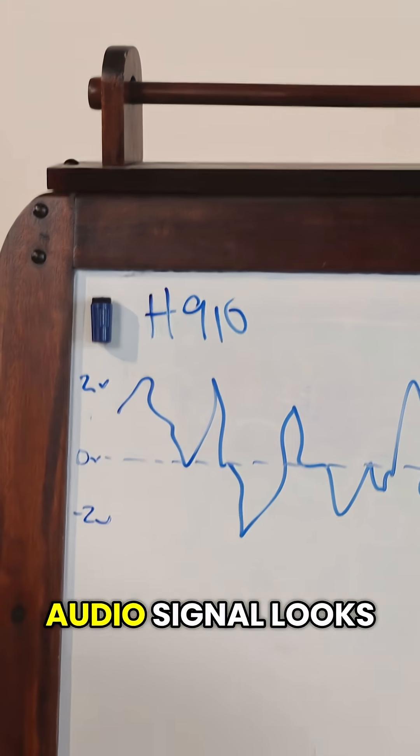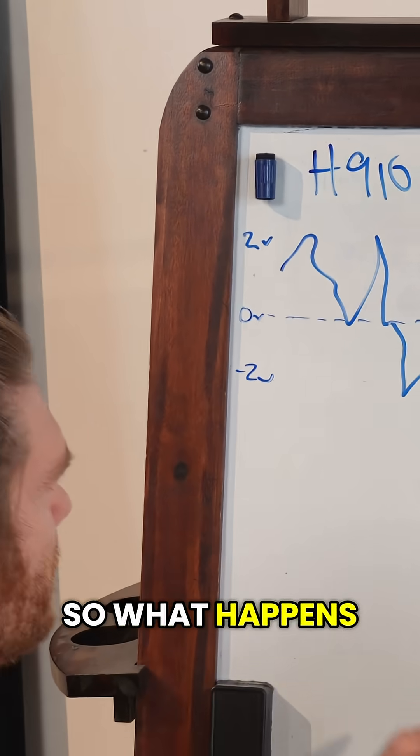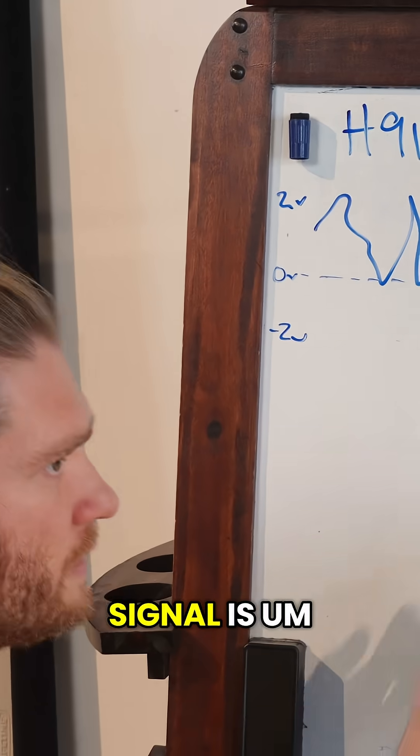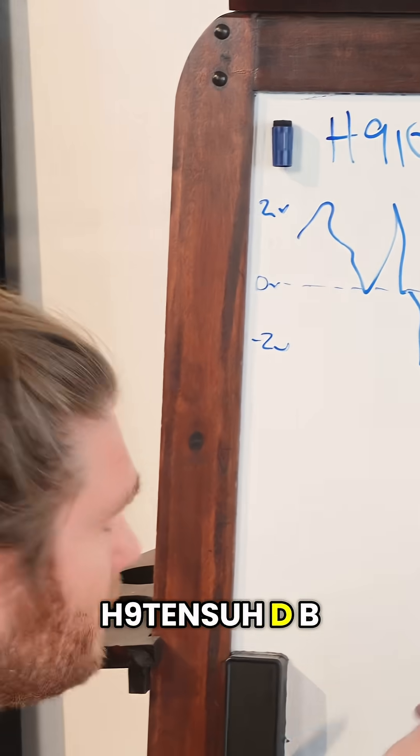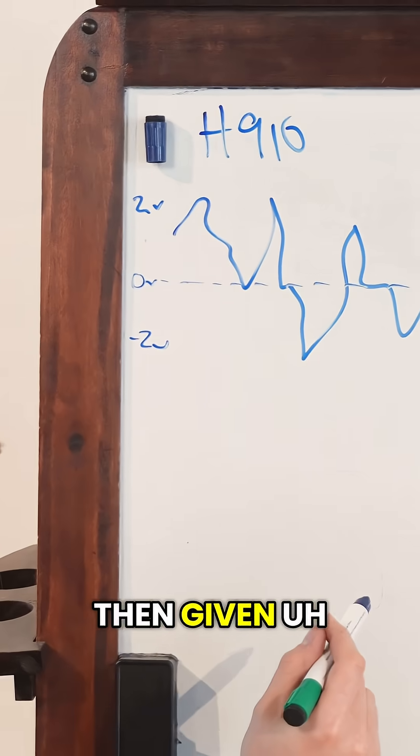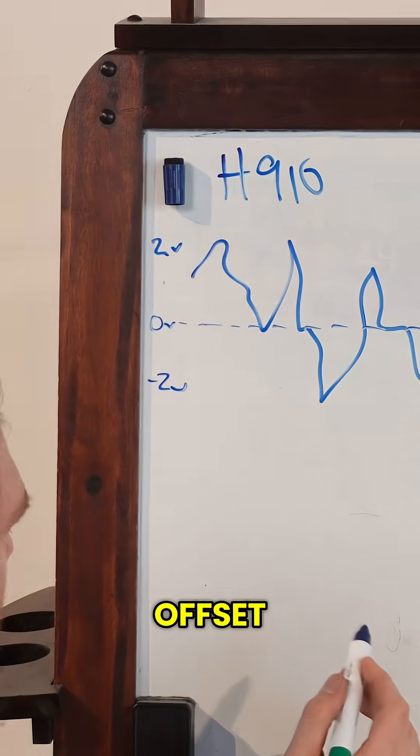That's typically what an audio signal looks like. So what happens is this audio signal is buffered and then compressed by the H910's DBX card, and it is then given a DC offset.